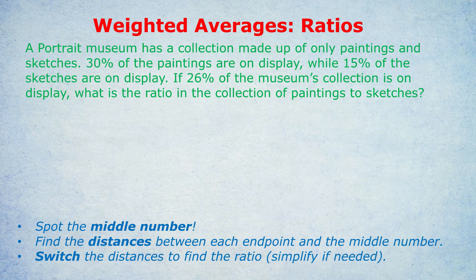Here is a classic question, and we'll discuss why this is a middle number or weighted average trick, and then I'm going to show you the trick, and you are going to be gobsmacked. A portrait museum has a collection made up of only paintings and sketches. 30% of the paintings are on display, while 15% of the sketches are on display. If 26% of the museum's collection is on display, what is the ratio in the collection of paintings to sketches? The weighted average is the 26%. So we've got 30% of paintings on display on one side, 15% of sketches on the other side, and an overall weighted average of 26% of the collection in total on display. So this is the perfect question to use the following trick.